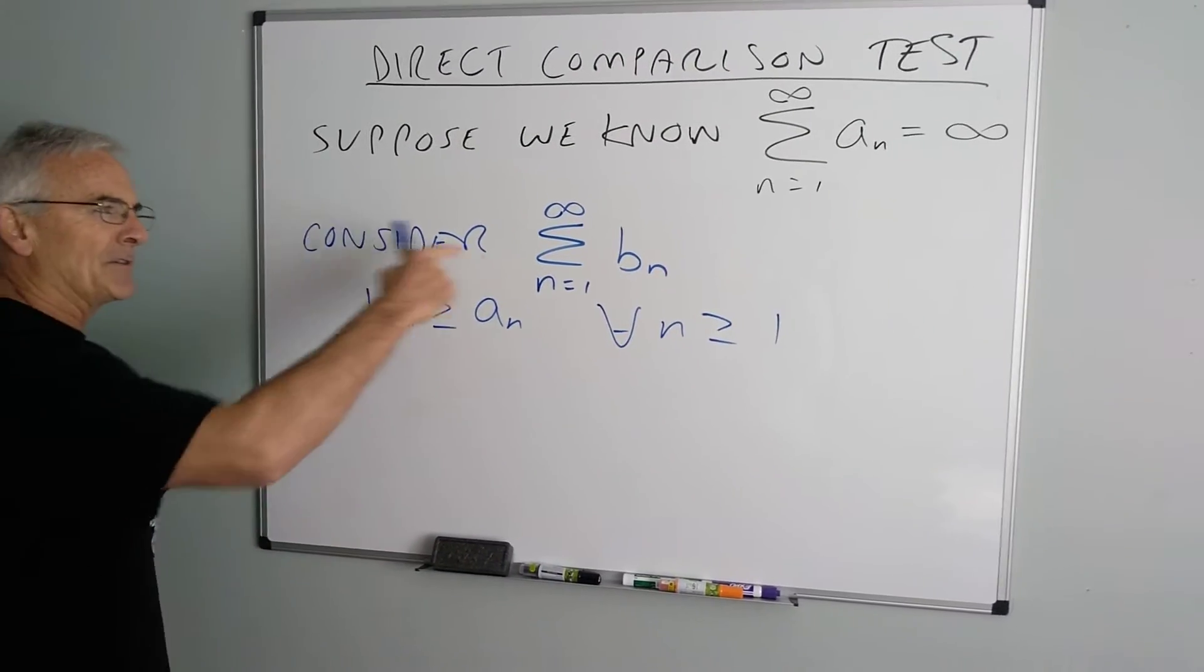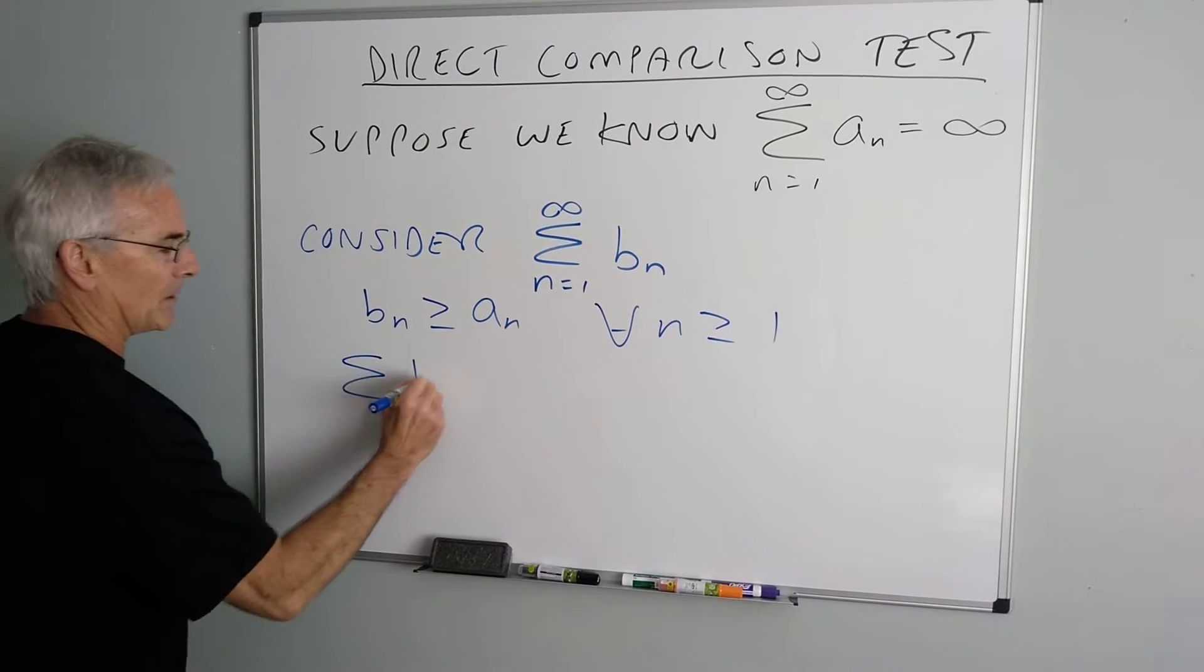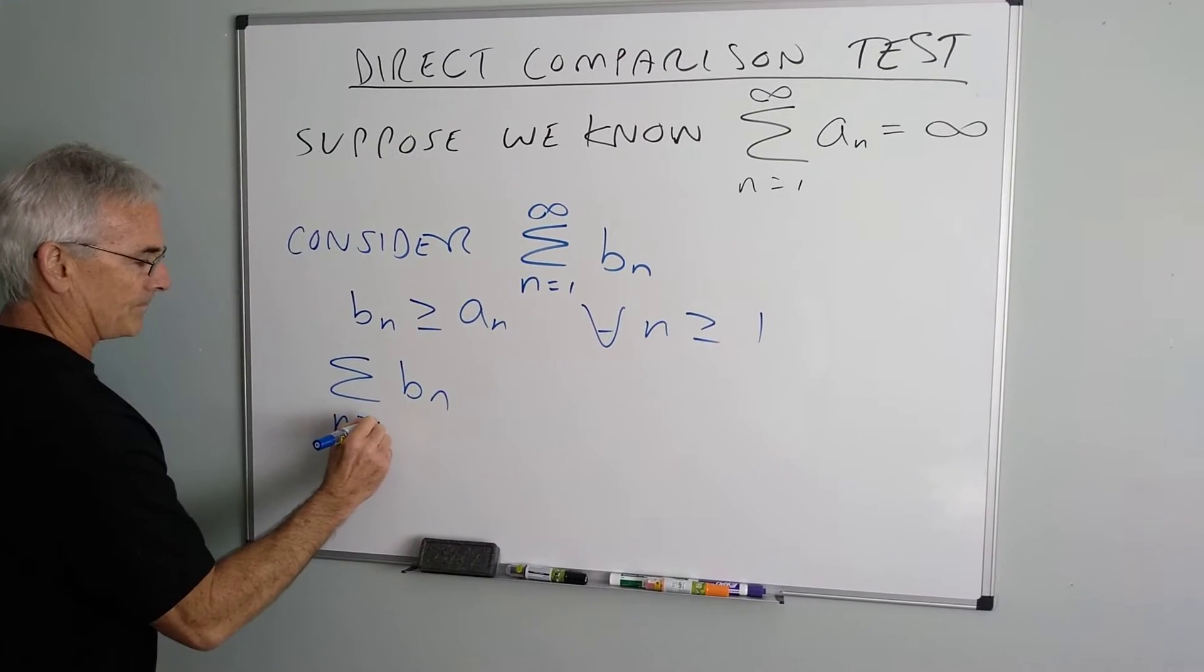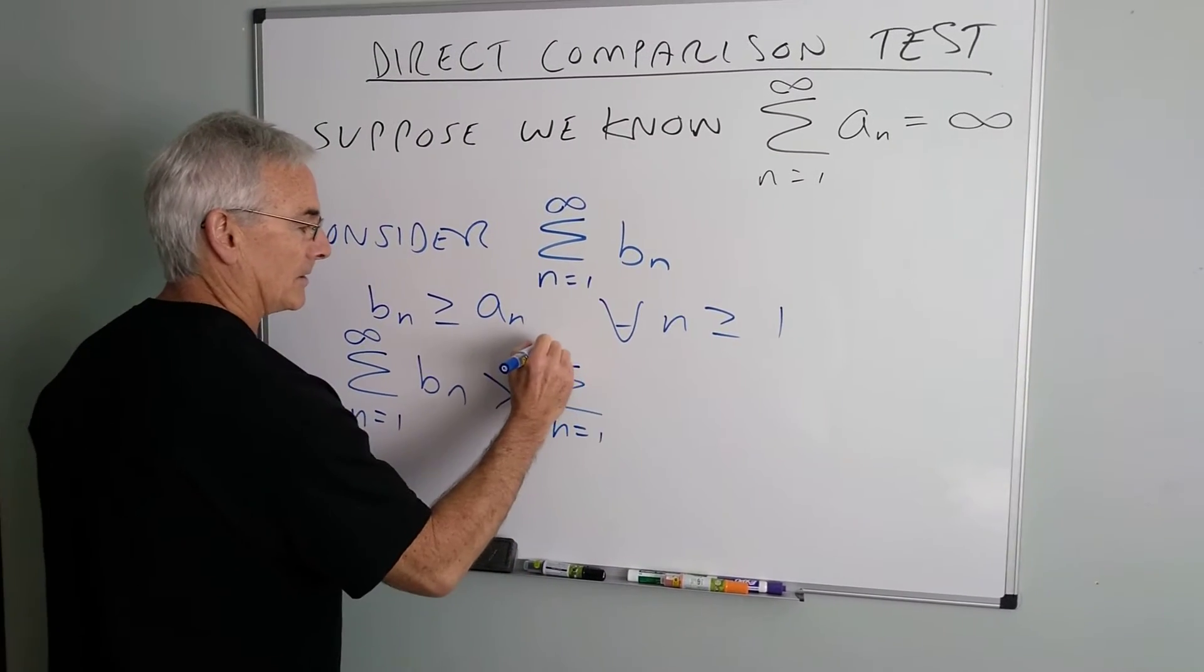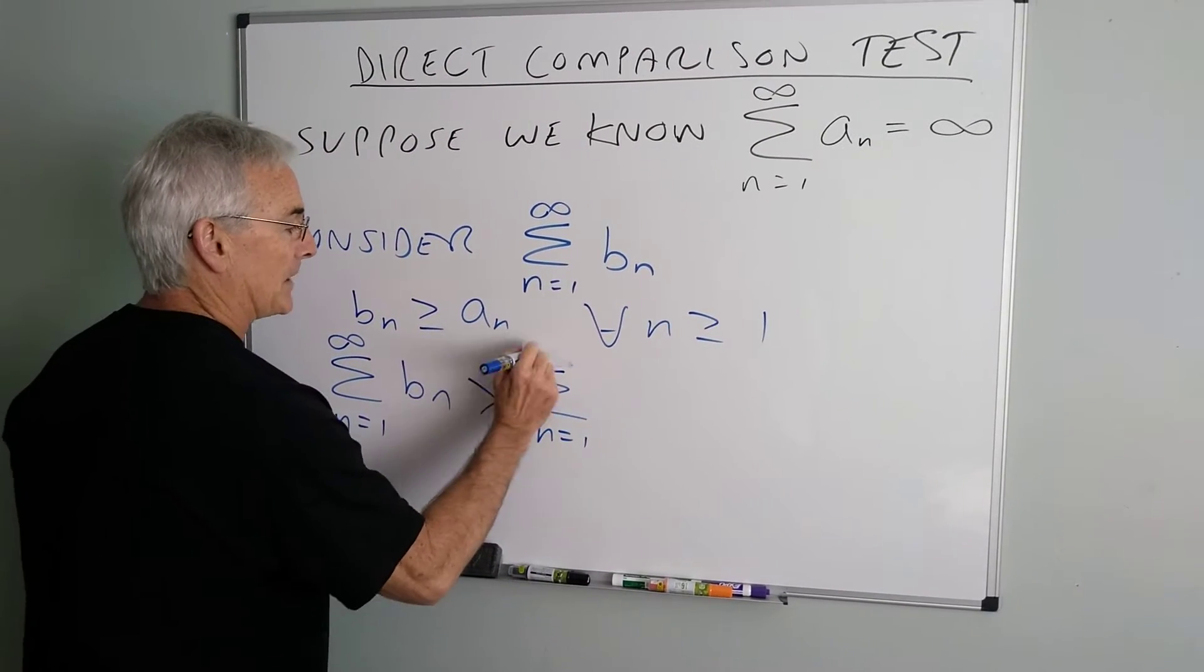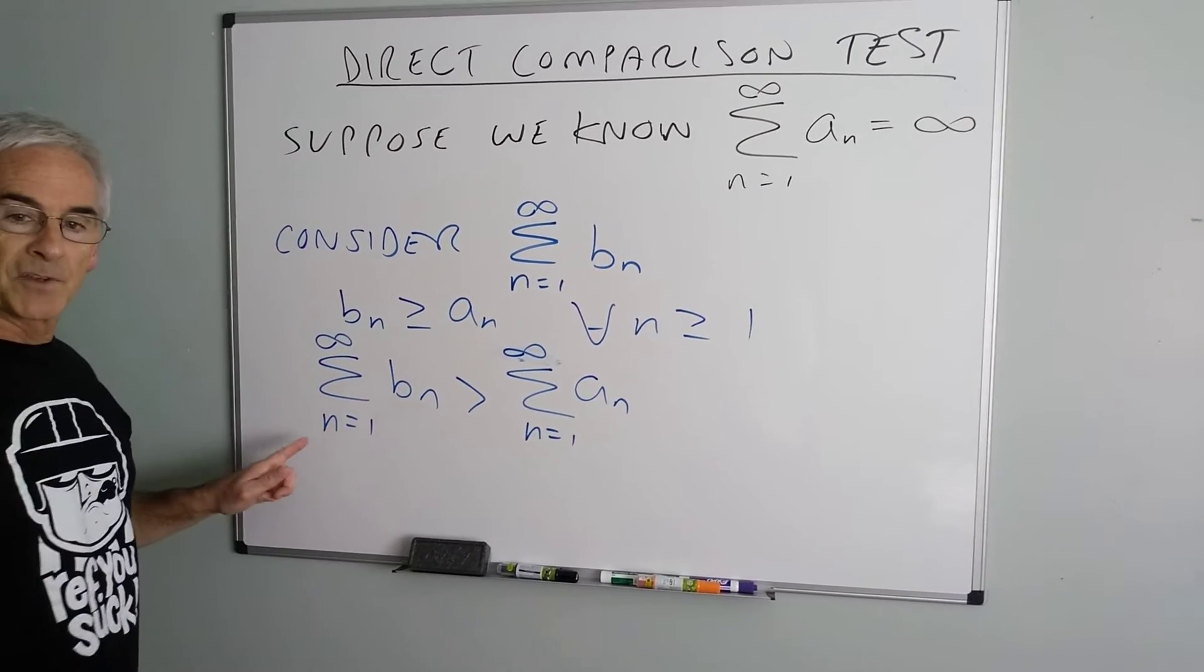So now if I said every term is bigger, we're going to add them up, then that would lead to the sum of the BNs being greater than the sum of the ANs. But because these were already infinite, this sum will be infinite.